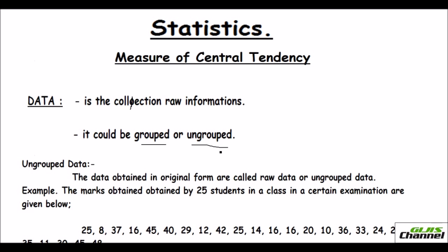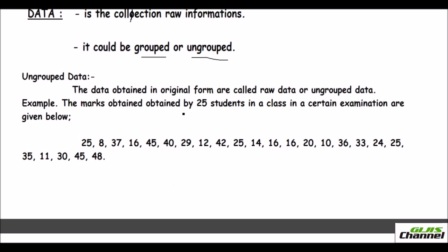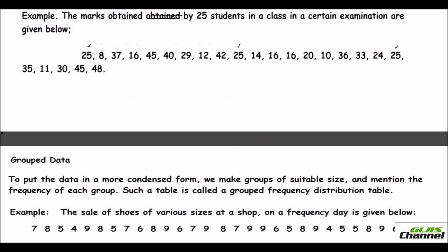You may have a doubt about what grouped data and ungrouped data are. Ungrouped data is the original form of data which you collect — you haven't done anything to it, it is just the raw source of information. Here I have given you an example: the marks obtained by 25 students in a class in a certain examination are given below. The marks are written as they are, and some numbers are repeated, but it is just noted down as the information is collected. This raw set of information is called ungrouped data.